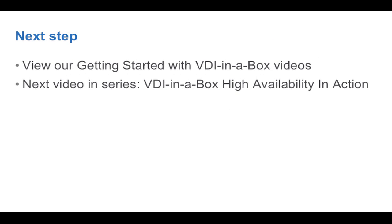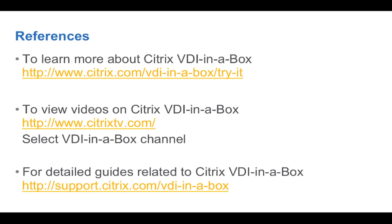We hope this gives you a good overview of how VDI in a Box's grid architecture works. The next video in this series is VDI in a Box High Availability in Action. To download a free trial, please go to citrix.com, select Products, and VDI in a Box. For instructions, please see the Getting Started with VDI in a Box series of videos on citrixtv.com, or see our documentation at support.citrix.com/VDIinaBox. Thanks for watching.